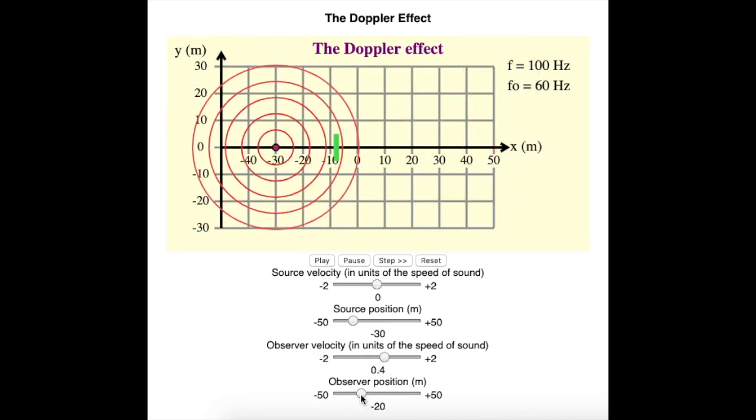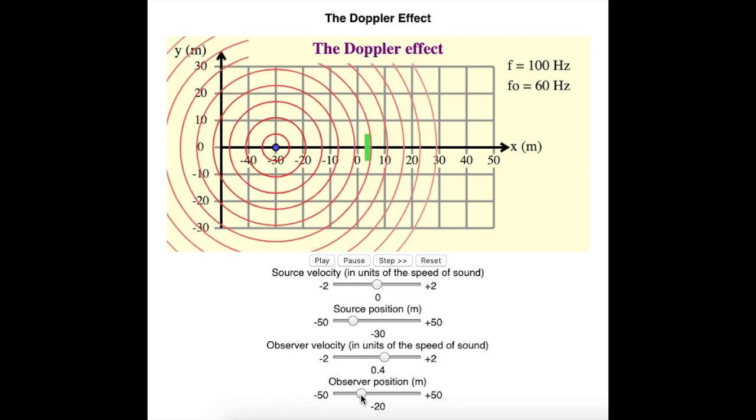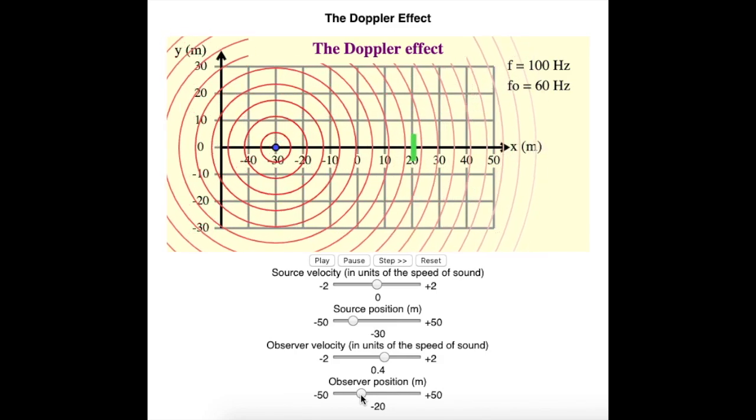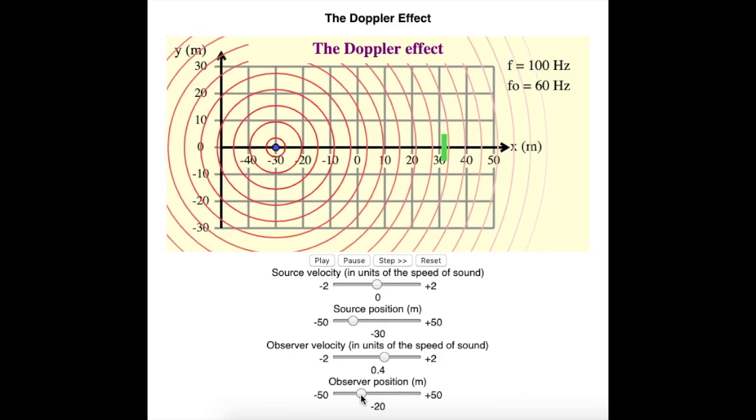If the observer is moving away from the source, then it's taking more time for the successive wave fronts to hit it, and that will lower the frequency.